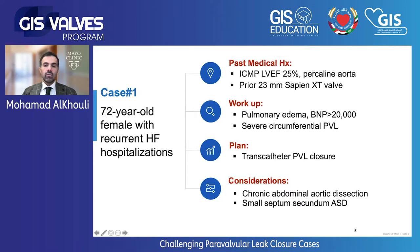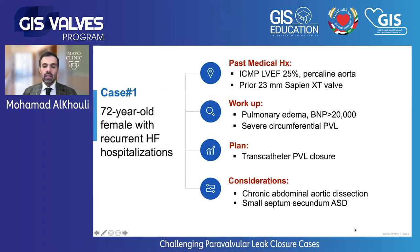Because of her surgical risk, age, and frailty, the decision was to proceed with transcatheter paravalvular leak closure. Some considerations for procedural planning: she has a chronic abdominal aortic dissection — that's why she had the apical approach — and she has a small secundum ASD that is not closed.